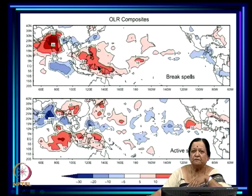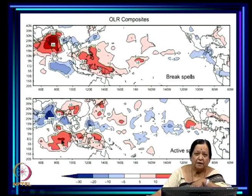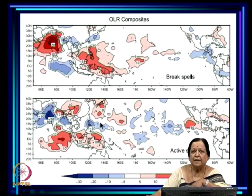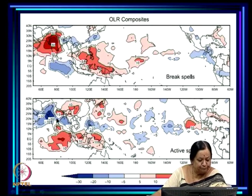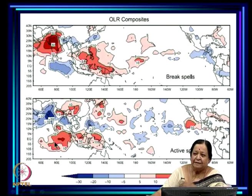This is the average OLR anomaly picture for break spells and for active spells. In break spells, convection is suppressed over the Indian region while it flares up over the eastern equatorial Indian Ocean — more rainfall than average there. There is also a signature called the quadrupole: suppression of convection in parts of the West Pacific and more rainfall to the north. In active spells you see the opposite — the active spell is rather coherent stretching right from the Indian region to the West Pacific. The signature of active and break spells suggests the eastern equatorial Indian Ocean plays a role in Indian rainfall variability.